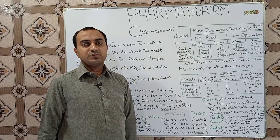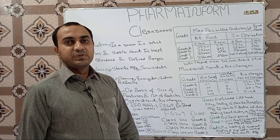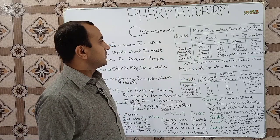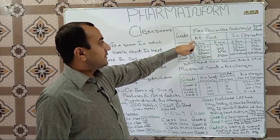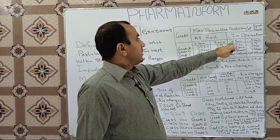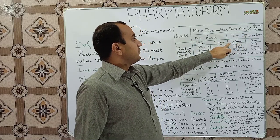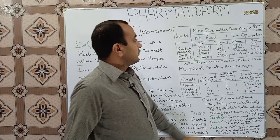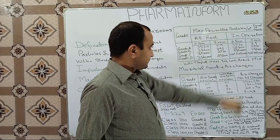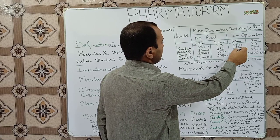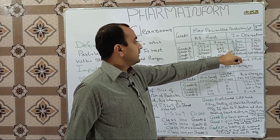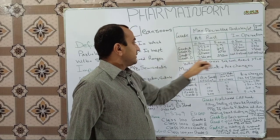For counting these particles we use an electronic particle counter. We will record a separate video on the procedure used for counting. Now we will discuss in operation — when we are performing our activities. In Grade A, 0.5 micron or above particles allowable are 3,520. In Grade B: 35,200. In Grade C: 3,52,000.